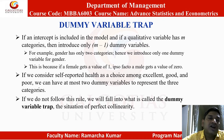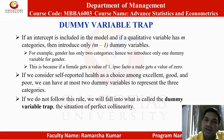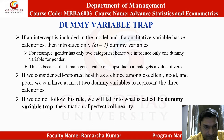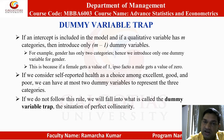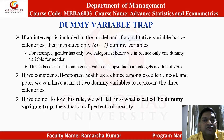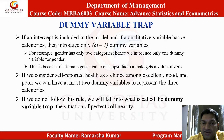Dummy variable trap. If an intercept is included in the model and if a qualitative variable has M categories, then introduce only M minus 1 dummy variables. For example, gender has only two categories. Hence, we introduce only one dummy variable for gender. This is because if a female gets a value of 1, ipso facto a male gets a value of 0.